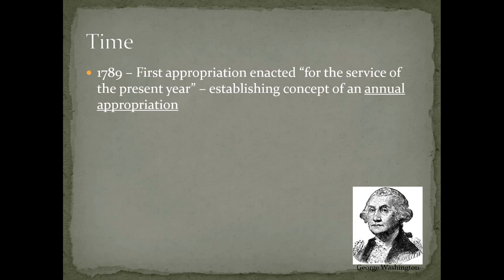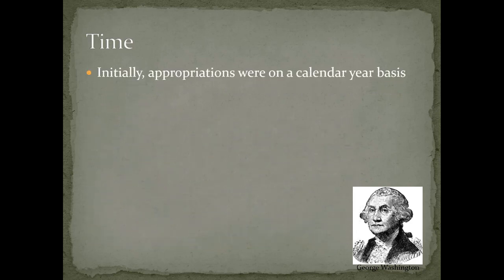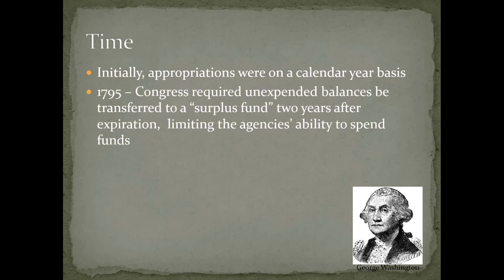In 1789, the very first Congress in their very first appropriation enacted funds 'for the service of the present year,' establishing the concept of an annual appropriation. Initially appropriations were made on a calendar year basis. But how long could the money be kept available? Congress decided this in 1795, when they required that unexpended balances be transferred to a surplus fund two years after expiration.